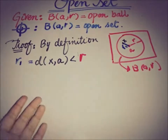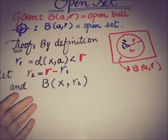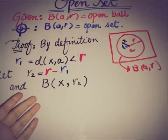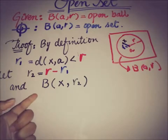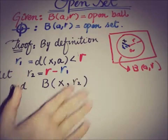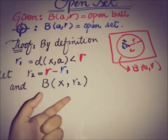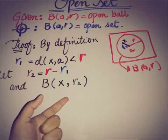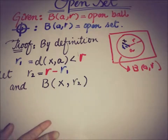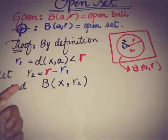Now we draw another open ball centered at x with radius r2, such that r2 = r − r1. We have to show that this open ball B(x, r2) is completely a subset of the open ball B(a, r). We can show this by taking a point from B(x, r2) and verifying it also belongs to B(a, r).